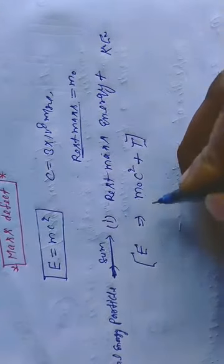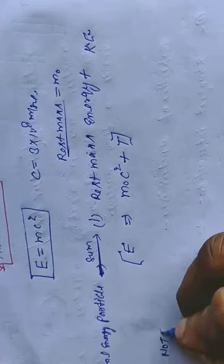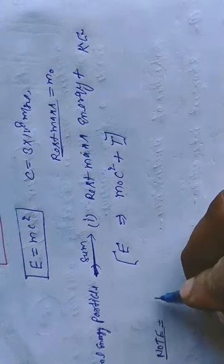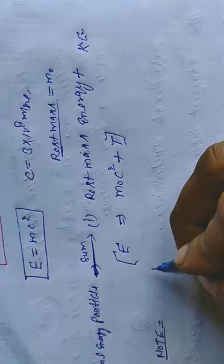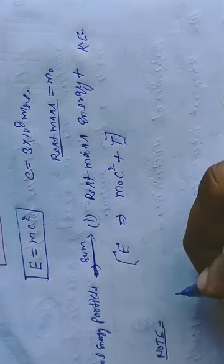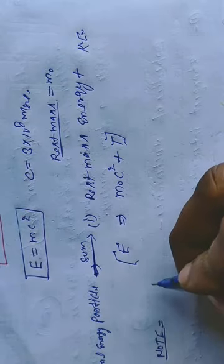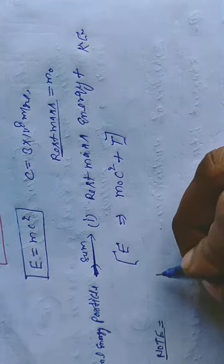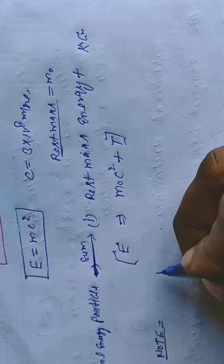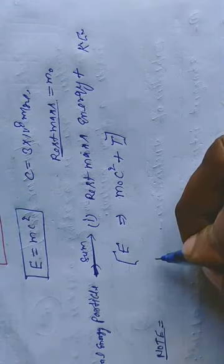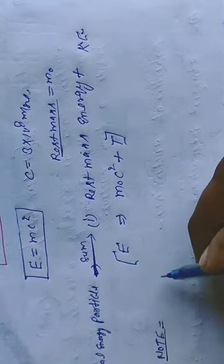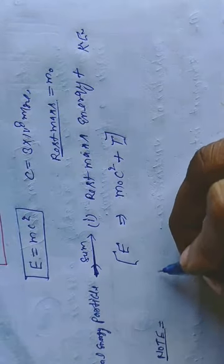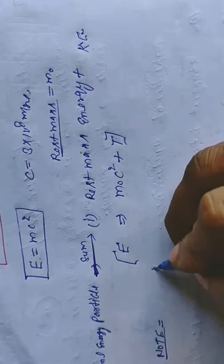Note this point: the mass of a particle is greater when it is in motion than when it is at rest. When the particle is in motion, its mass is maximum compared to when the particle is at rest.